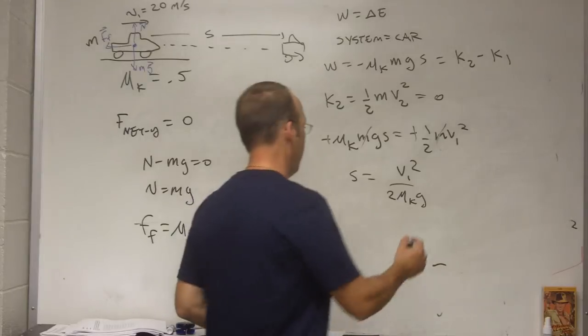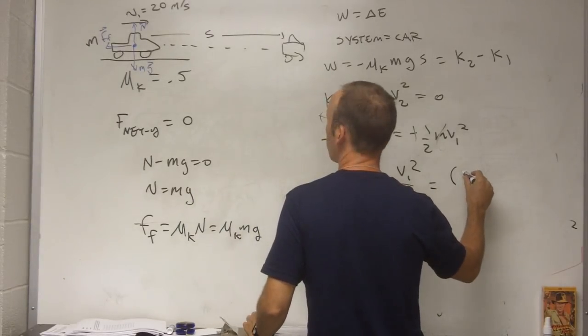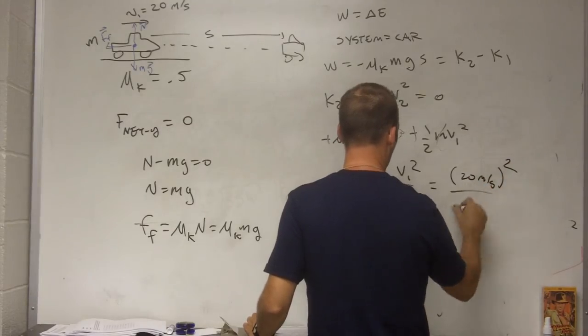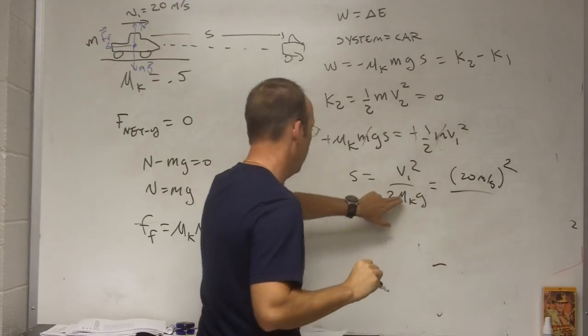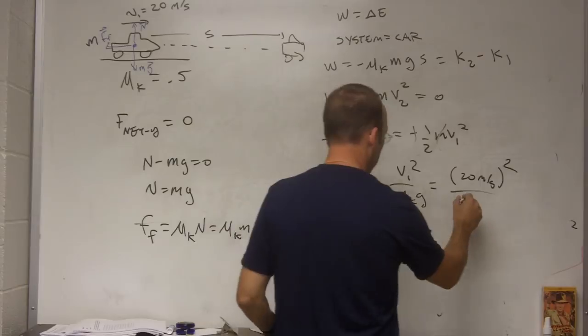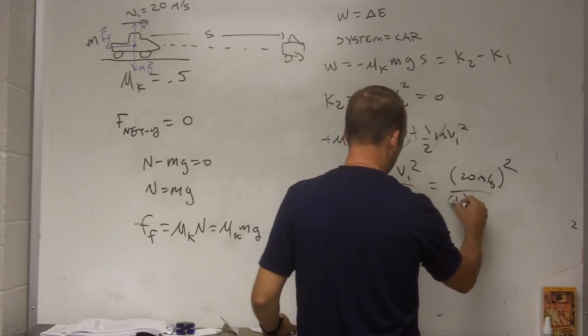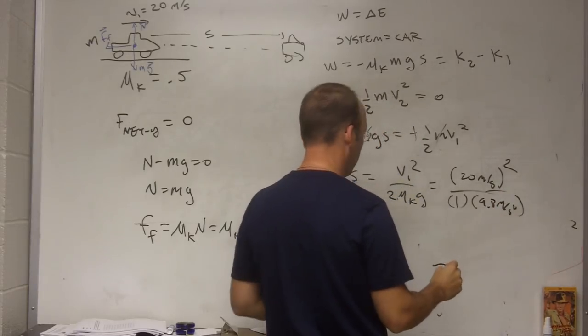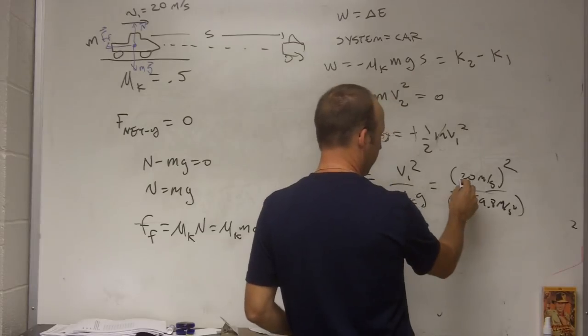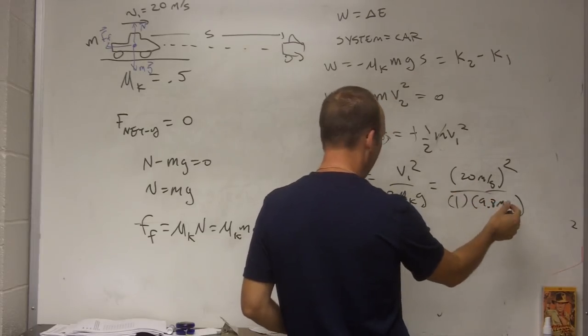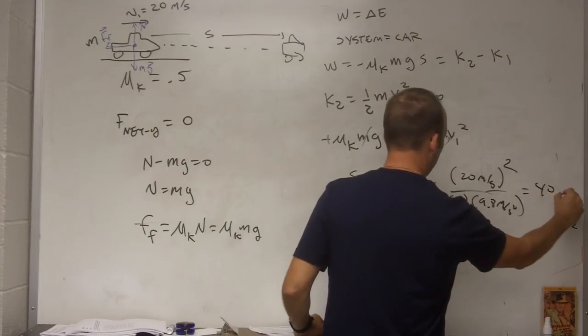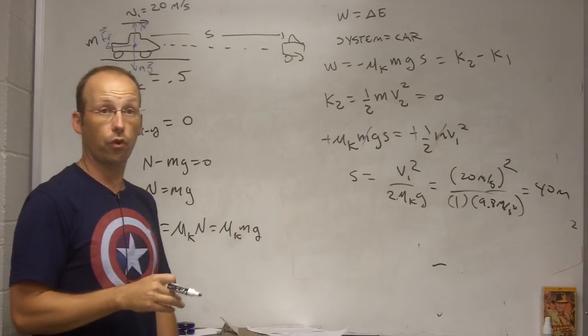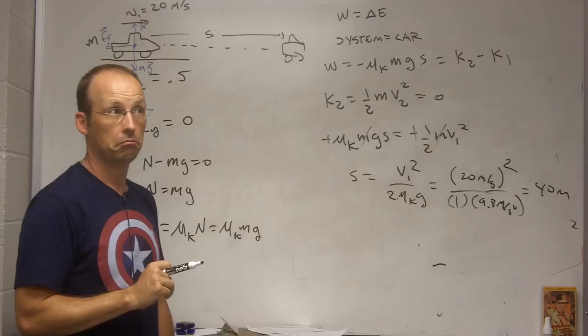So let's just put in some values here. So this is going to be 20 meters per second squared over 2 times 0.5, this is going to be 1, divided by and times 9.8 meters per second squared. So that's going to be about, this is 400 divided by 10, so 40 meters, approximately 40 meters. That seems reasonable, 40 meters to stop,